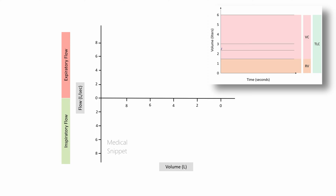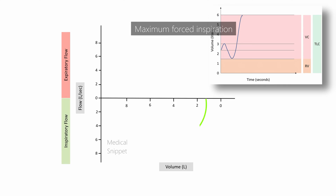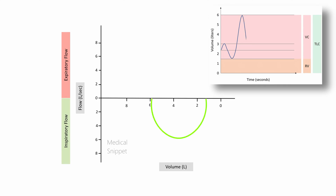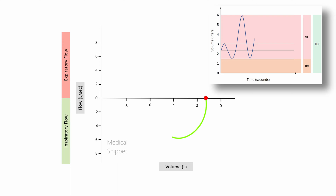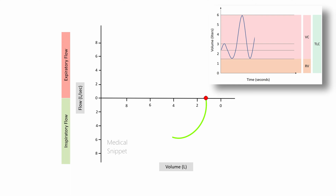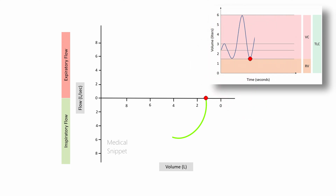In the flow volume loop, the inspiratory flow during maximal forced inspiratory effort is plotted, and similarly the expiratory flow during maximal forced expiratory effort is plotted. The inspiratory loop starts at the point on the x-axis denoting the residual volume — the volume of air remaining in the lung after a maximal forceful expiration.